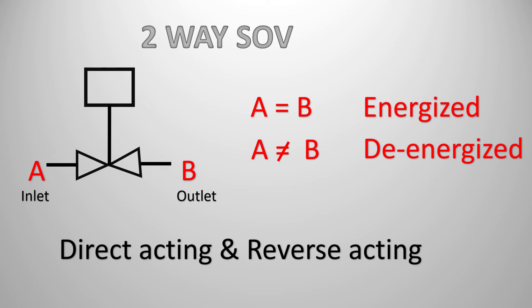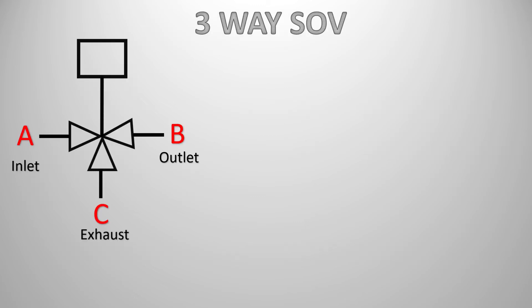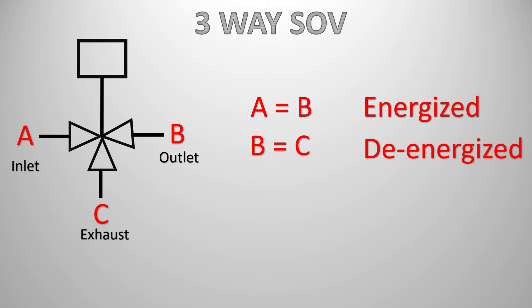Similar to the two-way solenoid valve, there is a three-way solenoid valve which has three ports: an inlet port, an outlet port, and a third exhaust or vent port (port C). When the coil gets energized, the inlet and outlet ports connect — A equals B. When the coil de-energizes, the outlet port connects with the exhaust or vent port (port C). This means that process medium — air, gas, or hydraulic fluid — which went into the outlet port will vent or exhaust through the exhaust port when de-energized.